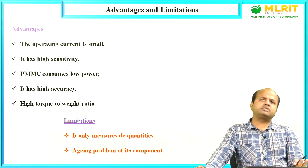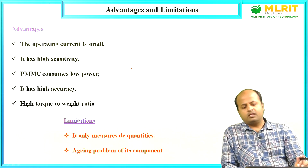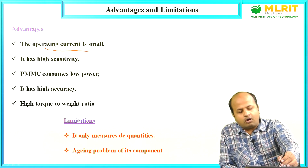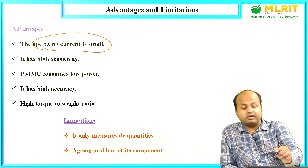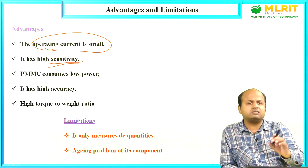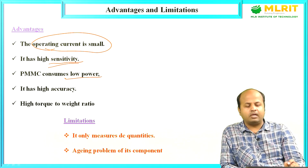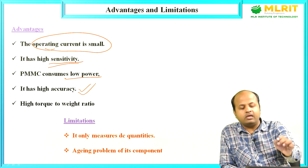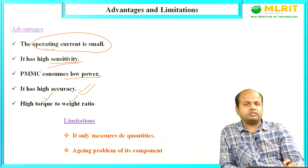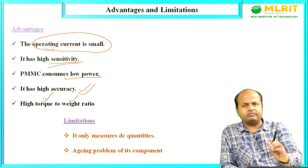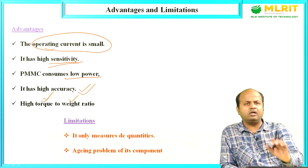The advantages of PMMC are: it requires very small operating current, making it widely used; it has very high sensitivity; it measures with great accuracy; it consumes very low power; and it has a high torque-to-weight ratio — high torque but very low weight — which is very good for a measuring instrument.